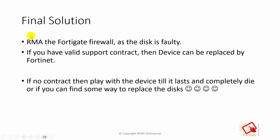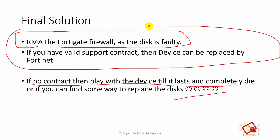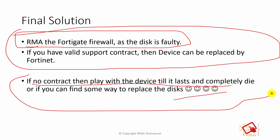The final solution is an RMA of the FortiGate firewall, as the disk is faulty. If you have a valid support contract, the device can be replaced by Fortinet - it depends on your contract. If there is no contract, then you are on your own until the device completely dies, or if you can find some way to replace the disk yourself. Those were all the possible solutions.